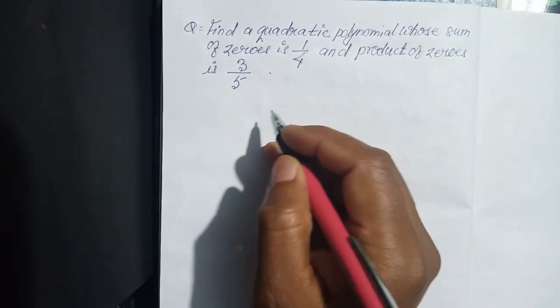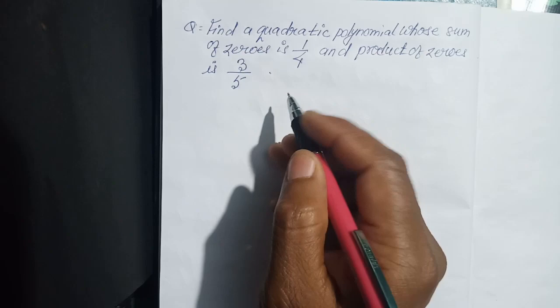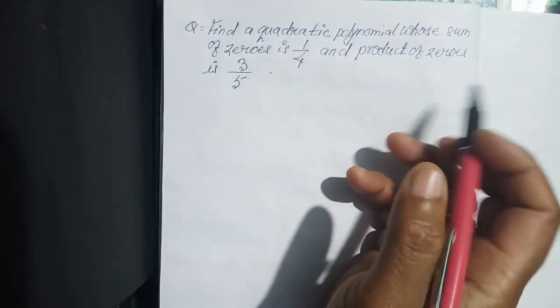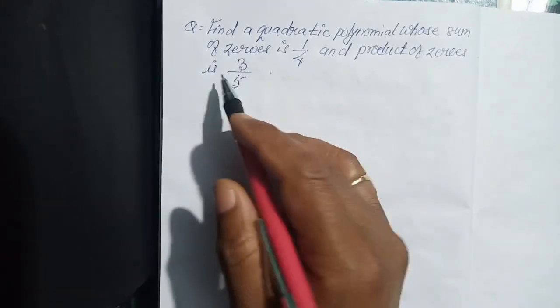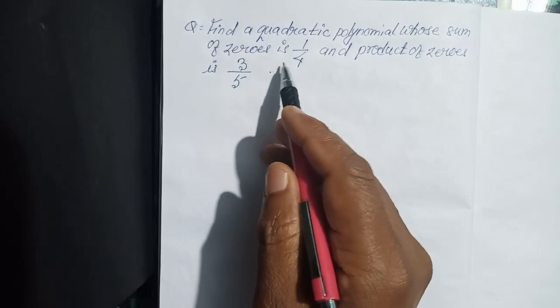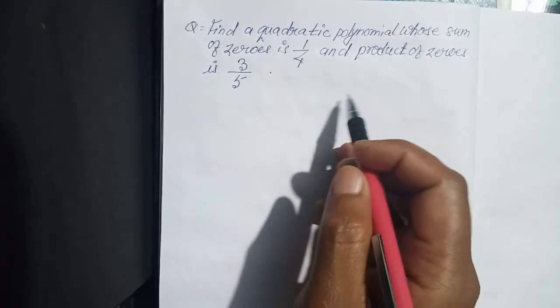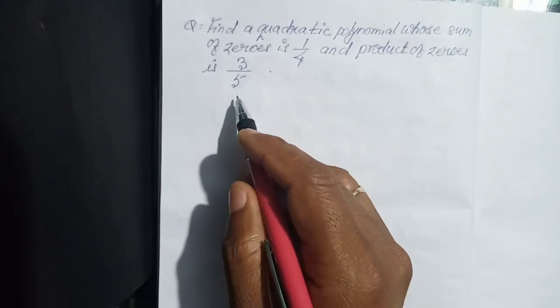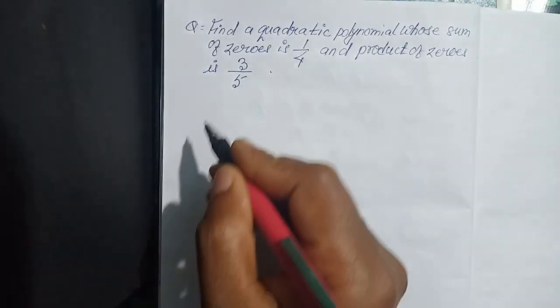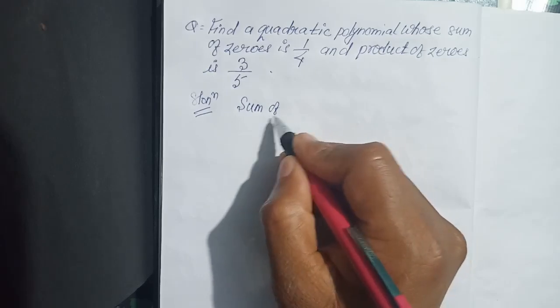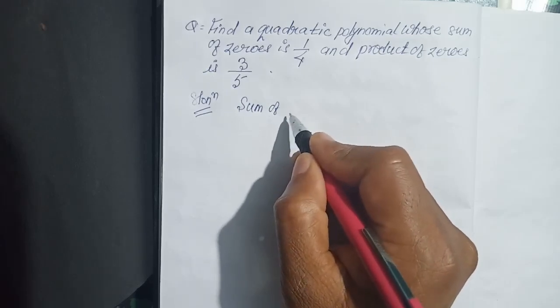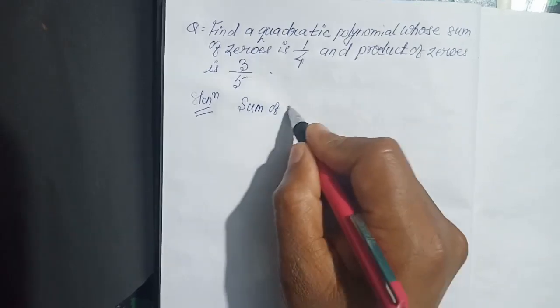Today I am going to show you how to find out the quadratic polynomial whose sum of zeros is 1 by 4 and product of zeros is 3 by 5. For that, sum of the zeros...